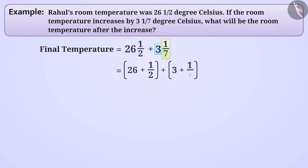Similarly, 3, 1 by 7 can be written as 3 plus 1 by 7. That is 26, 1 by 2 plus 3, 1 by 7 is equal to 26 plus 1 by 2 plus 3 plus 1 by 7.